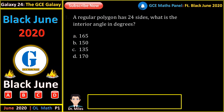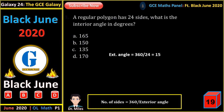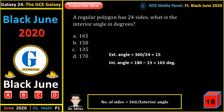A regular polygon has 24 sides. What is the interior angle in degrees? The external angle is equal to 360 degrees divided by the number of sides, giving us 15 degrees. The interior angle will be equal to 180 minus 15, which gives us 165 degrees.